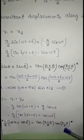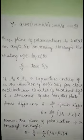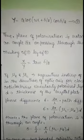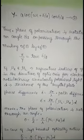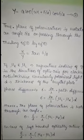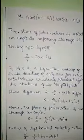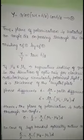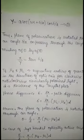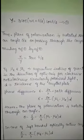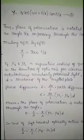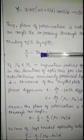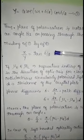The resultant vibrations along the X and Y axes have the same phase. Therefore, the resultant vibration is plane polarized and it makes an angle δ/2 with the original direction. Thus, the plane of polarization is rotated through an angle of δ/2 on passing through the crystal. Dividing equation 1 by equation 2, we get X/Y = tan(δ/2).